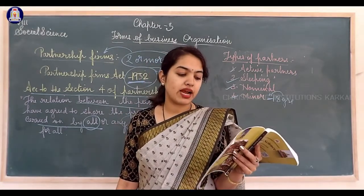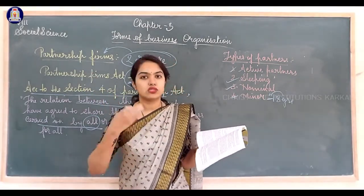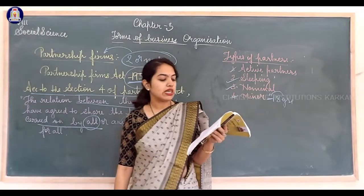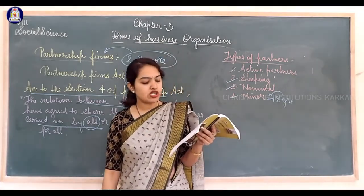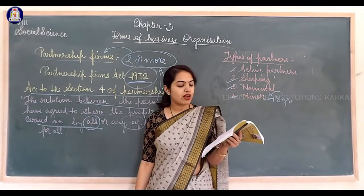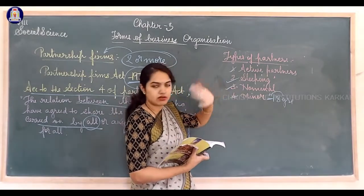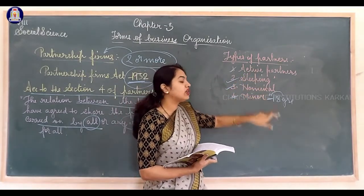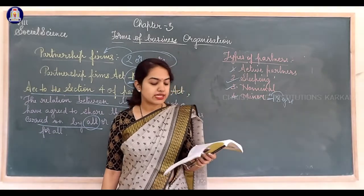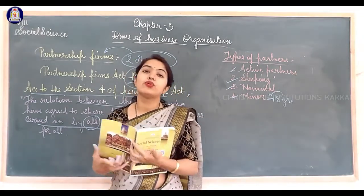When a new partnership is started, a minor cannot be admitted. Apart from these four types — active, sleeping, nominal, and minor partners — there are also secret partners, limited partners, and partners eligible for only profit, whereas nominal partners are liable only for losses.